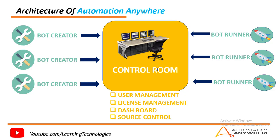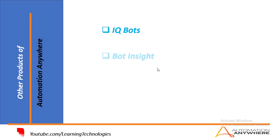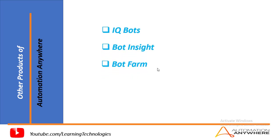To summarize, these three components work together: the developer creates a task or bot and uploads it to the Control Room. The Control Room then schedules and executes these bots on the Bot Runners based on priority requirements. Automation Anywhere also provides three more additional products: IQ Bots, Bot Insight, and Bot Form.